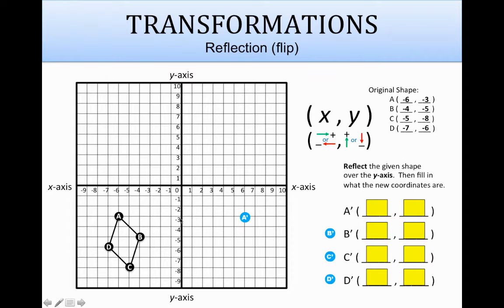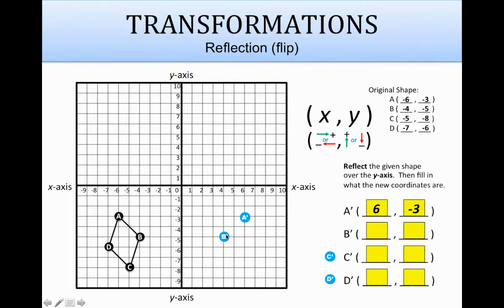Once it's the same distance away on that line, you've got to get the coordinates for it. So that's 6 to the right — that's a positive 6 — and then down 3, which is a negative 3. We'll grab b prime and bring it over to b. See how far away b is from that line — it's 4 units. So it's going to be 4 away on this side. Coordinates are positive 4 for x and negative 5 for y.